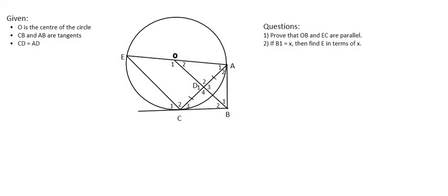In this circle, we are given that O is the center, CB and AB are tangents, and then length CD is equal to AD. So we can see that they've given us that by showing us those two lines over there. First question is, prove that OB and EC are parallel.